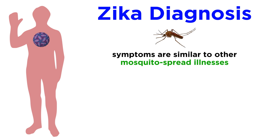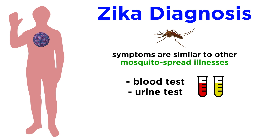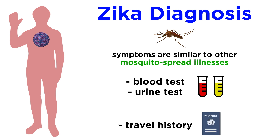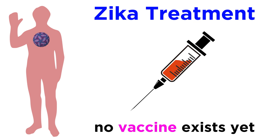Diagnosis of Zika infection isn't entirely clear cut, since symptoms of Zika aren't much different from other mosquito-spread illnesses. But there are both blood and urine tests that can confirm Zika, and a person's recent travel history can help in figuring out if they've been exposed or not.